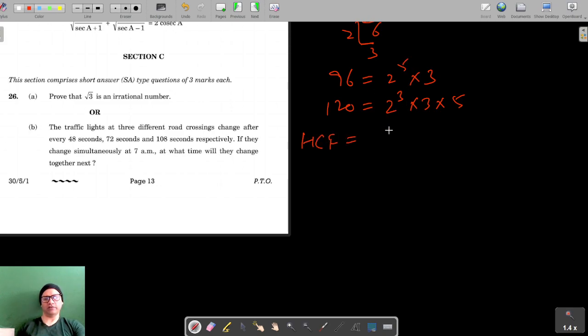So for the HCF, among these two we have to take the smallest common factors: 2 cubed and 3. So it's 8 into 3 which is equal to 24.